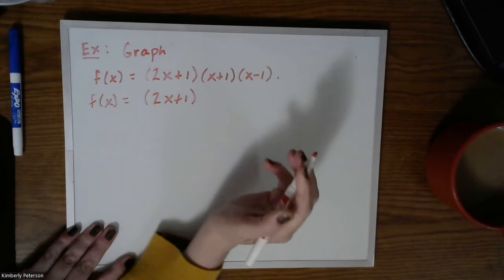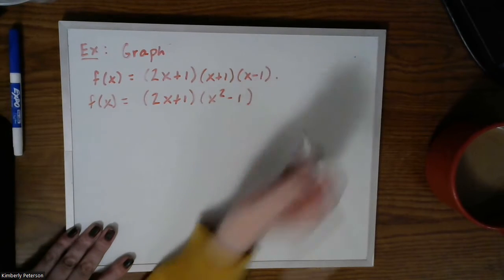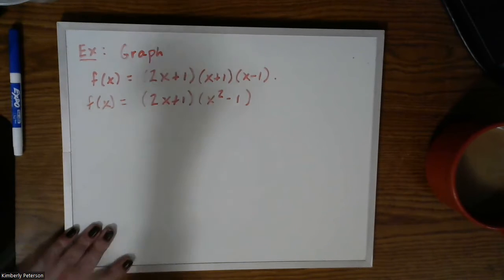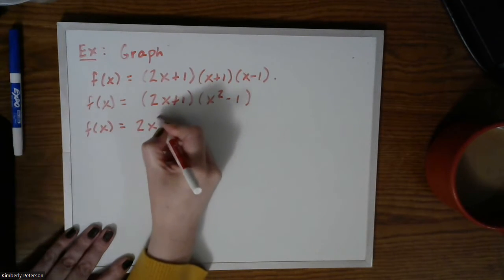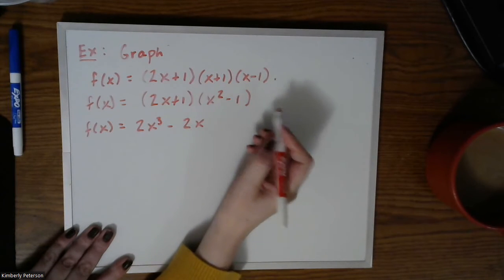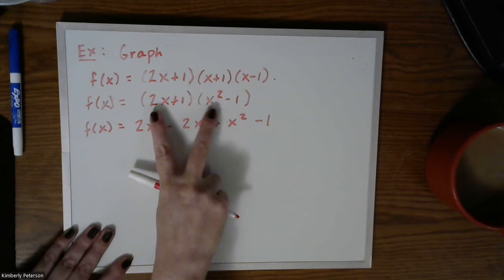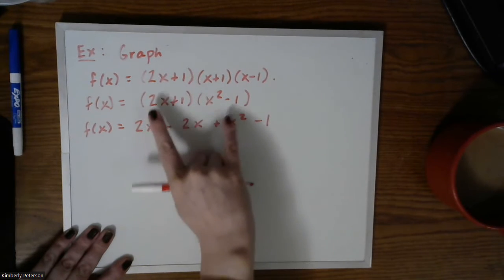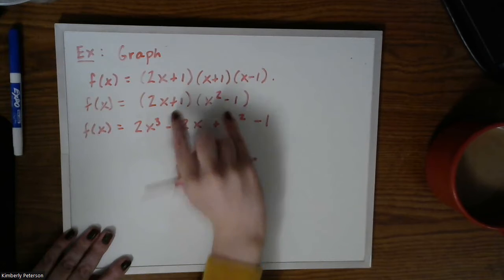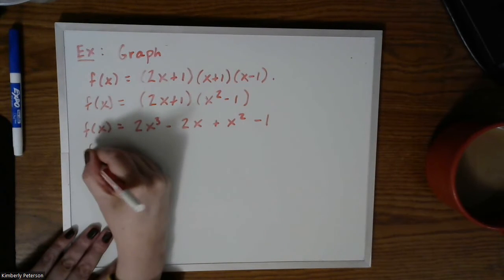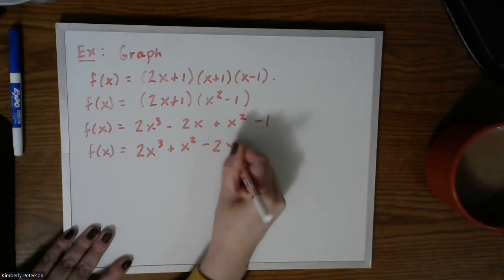Let's do some algebra. I notice (x plus 1)(x minus 1) is a difference of squares, giving x squared minus 1. Then I FOIL (2x plus 1)(x squared minus 1): 2x cubed minus 2x plus x squared minus 1.